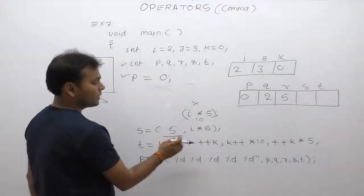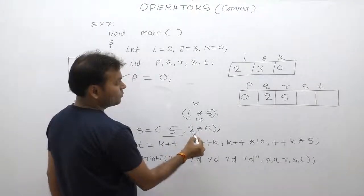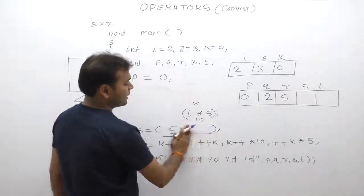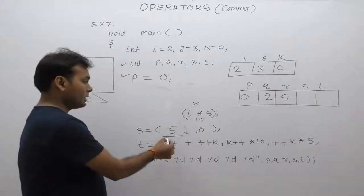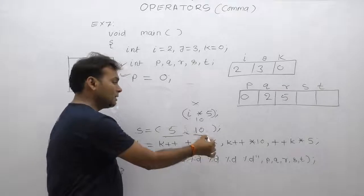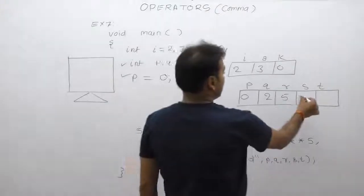Then remove it. Then i, value of i is 2, 2 multiplied by 5 result is 10. In the final result, comma separated, 5,10. 10 is assigned to the value of s. s becomes 10.